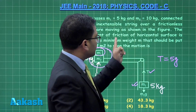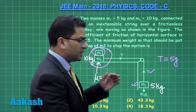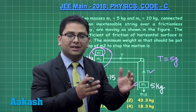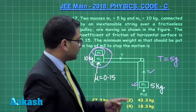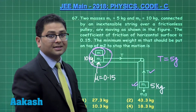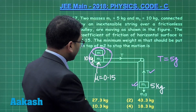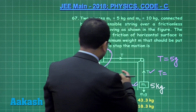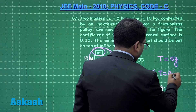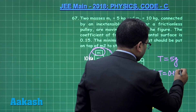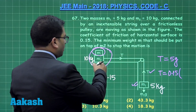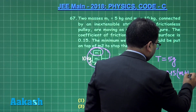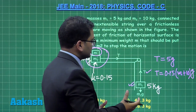We consider the minimum weight case, meaning the system is at the verge of motion — it is at rest but at the verge, so the friction acting here is limiting friction. Taking m and m2 as the system, the tension equals mu times the normal reaction, which is 0.15 times (m + m2)g, so T = 0.15(m + 10)g.